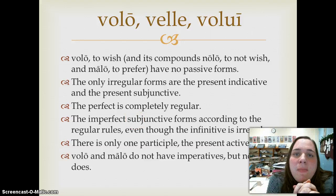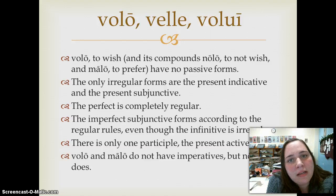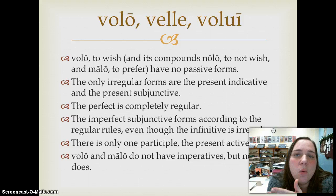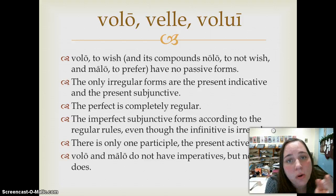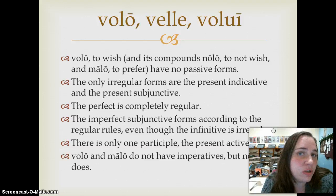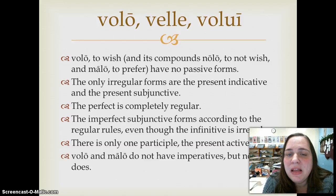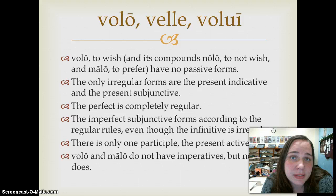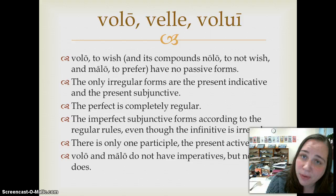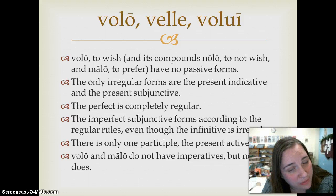Let's talk about an irregular verb and its two compounds. The irregular verb volo, velle, volui means to wish, and it has two compounds: nolo, to not wish, and malo, to wish more or to prefer. A couple things about volo and its compounds nolo and malo: they have no passive forms, which is why there is no fourth principal part — that's the perfect passive participle. There is no passive.